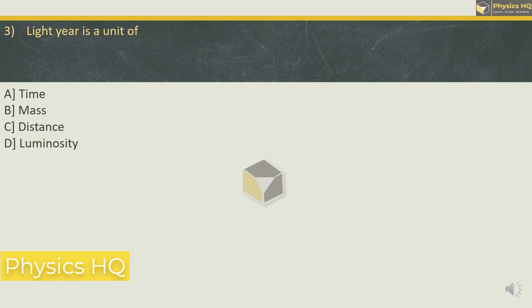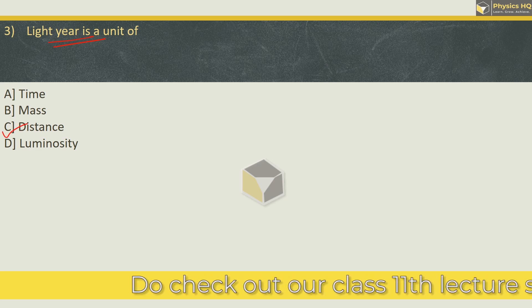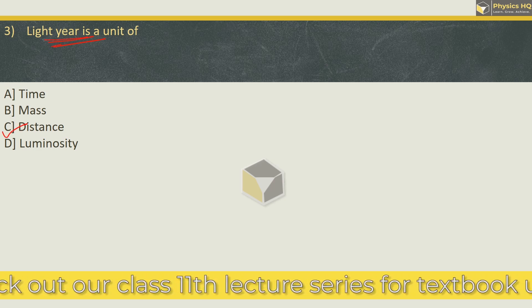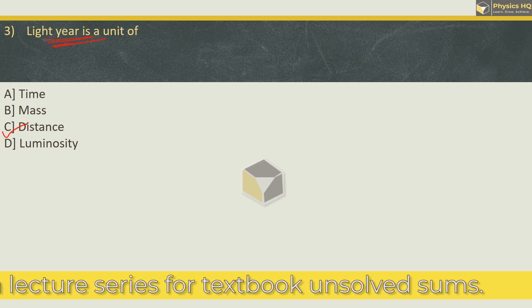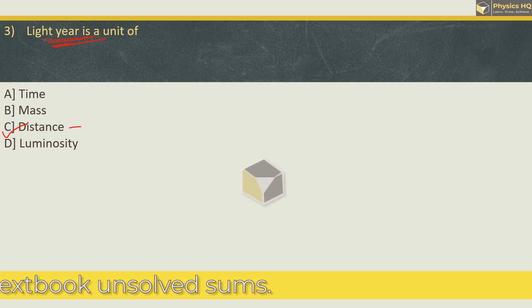Let us go ahead to the next MCQ. Light year is a unit of time, mass, distance, or luminosity. So light year is basically used to measure distance. It is the distance traveled by a light in a year. So it is used for measuring distance.